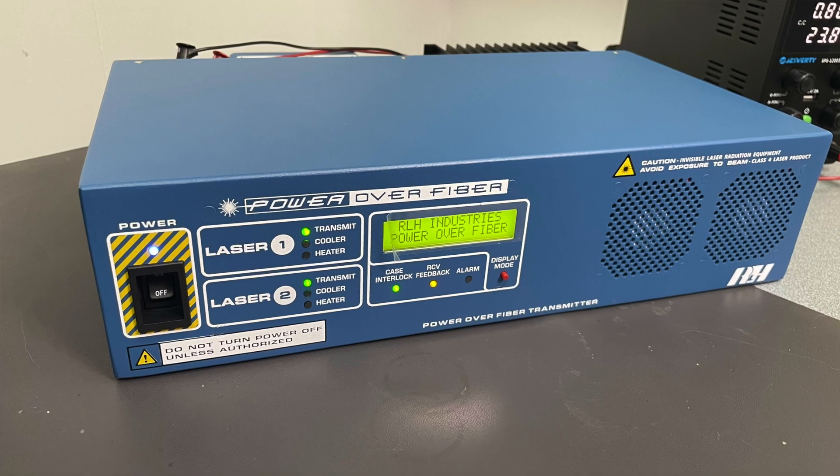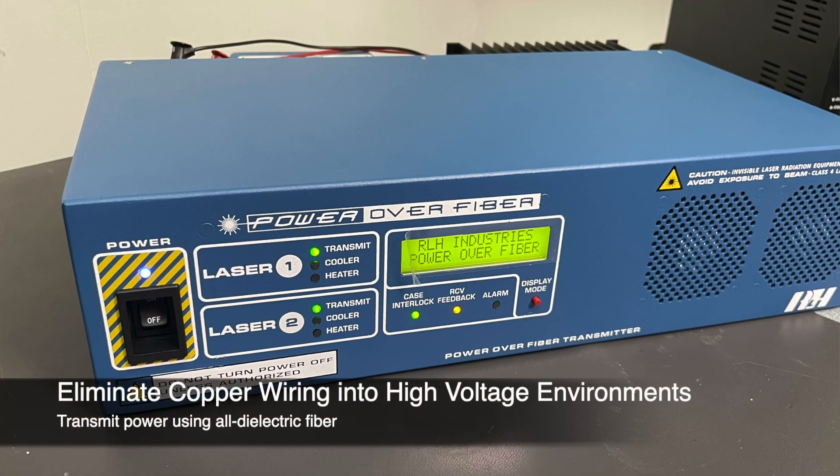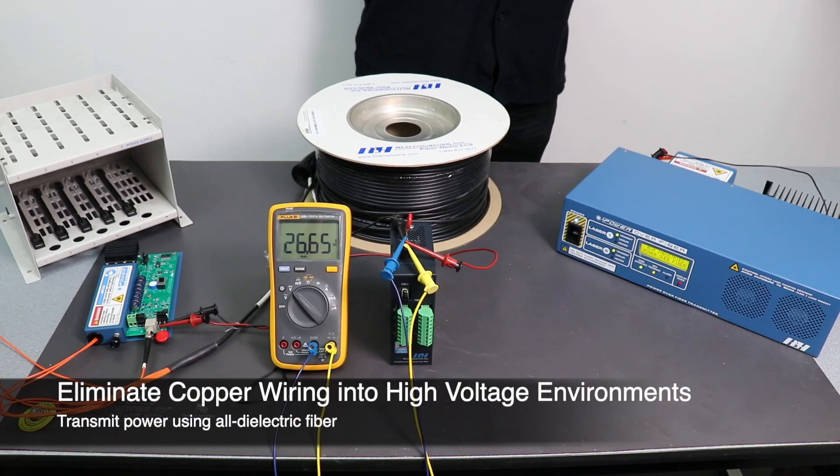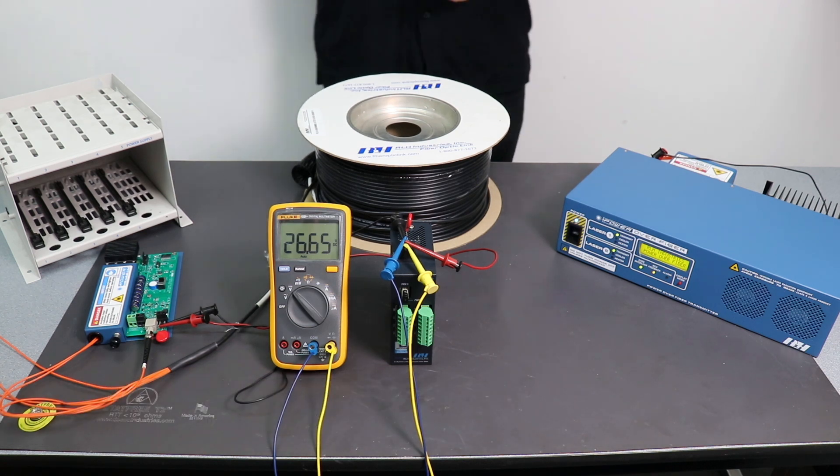We are using power over fiber system to eliminate copper wiring running through high voltage and those lightning prone environments because you have to avoid coppers. You can damage your PLCs or whatever system you're running at that point.